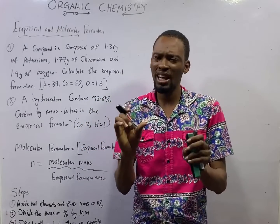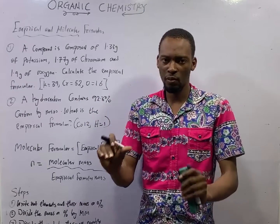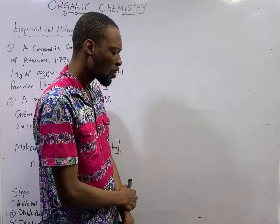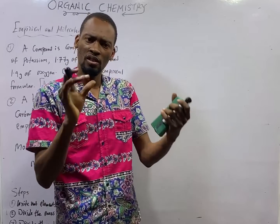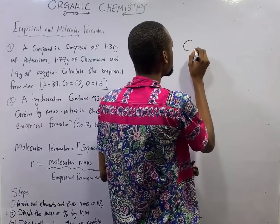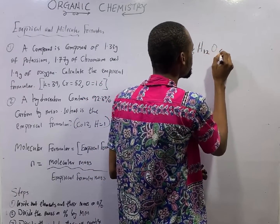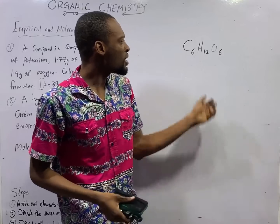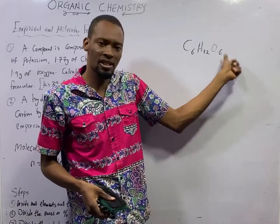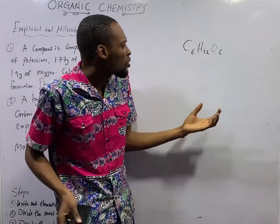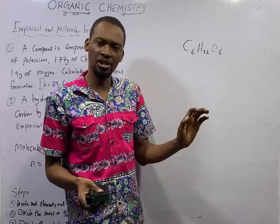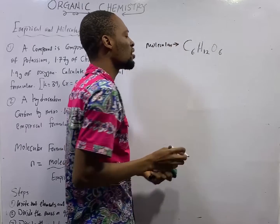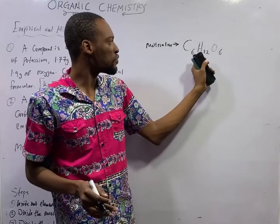In this episode, we shall be looking at empirical formula and molecular formula. These are formulas we can use to represent compounds — organic compounds most of the time. Glucose is C6H12O6. This is the molecular formula of glucose. It shows us how many carbons, how many hydrogens, and how many oxygens are present in glucose. Glucose has 6 carbon, 12 hydrogen, and 6 oxygen. The molecular formula tells us how many of each element combine to form the compound.